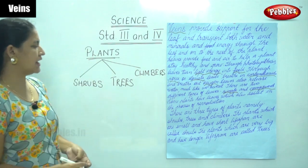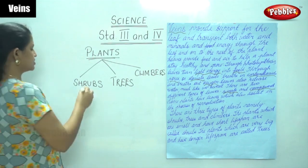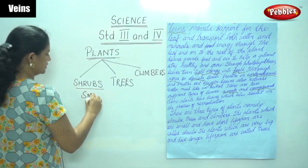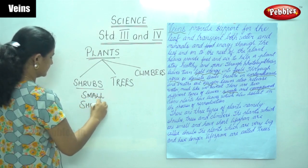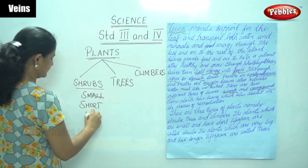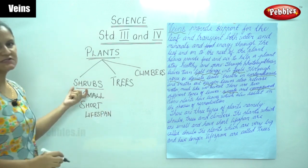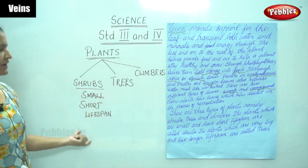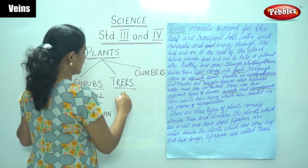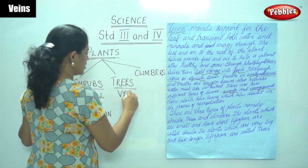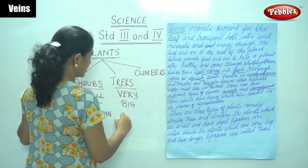Plants which are small and have a short life span are called shrubs. Plants that are very big and have a longer life span are known as trees.